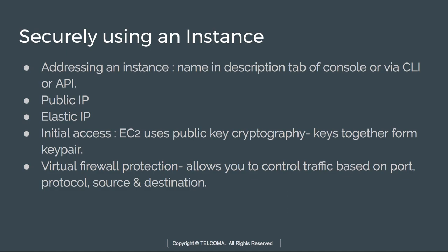For initial access, EC2 uses public key cryptography. Keys together form a key pair — a public key to encrypt and an associated private key to decrypt. AWS stores the public key, and the private key is kept by the customer. These two keys — public and private — form the key pair used for secure access.